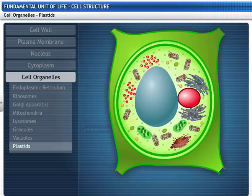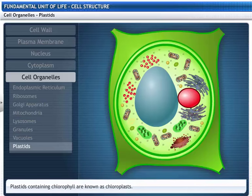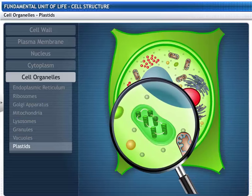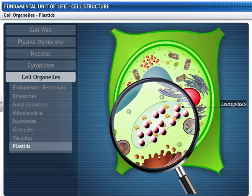Colored plastids, called chromoplasts, and colorless plastids, called leukoplasts. Plastids containing chlorophyll are known as chloroplasts. Chloroplasts are important for photosynthesis. Chloroplasts have membranous layers called grana in a ground substance called stroma. Leukoplasts store starch, oils, and protein granules.